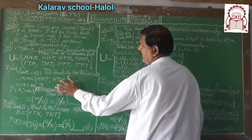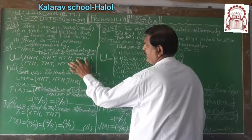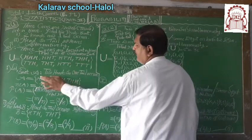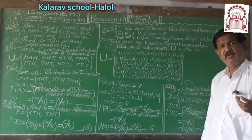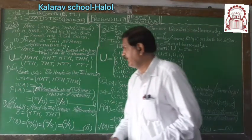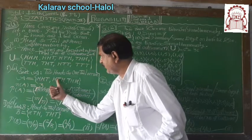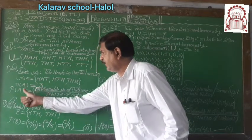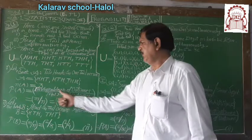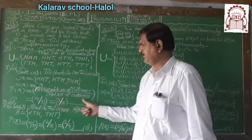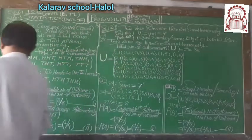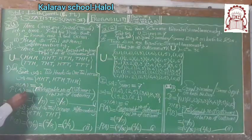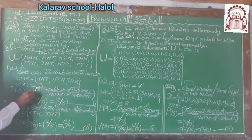HTH, THH: 2 heads and 1 tail. Favourable outcomes are 3. Number of elements, favourable outcomes in A: 1, 2, 3. Therefore probability of A, favourable number of outcomes upon total number of outcomes, n(A) by n(S), is equal to 3 by 8.